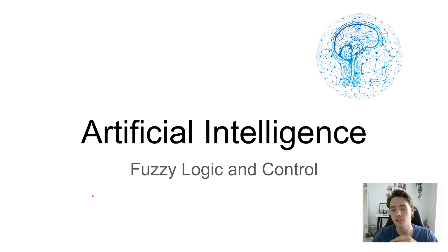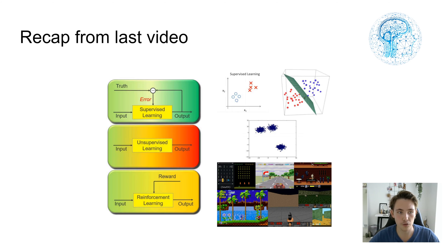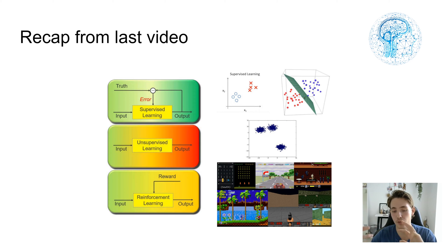Hey guys, welcome to another video in this artificial intelligence tutorial. In this video we're going to talk about logic and control inside artificial intelligence. First, we'll do a short recap from the last video where we talked about the introduction to AI, where I showed you an eBay classifier example where we created our model with different functions and methods, trained it, and did some predictions on data the model hadn't seen before.